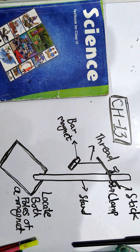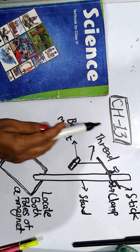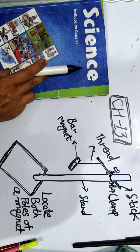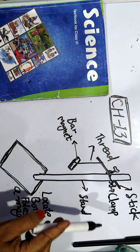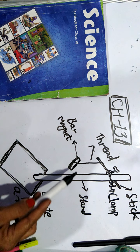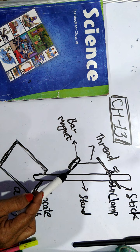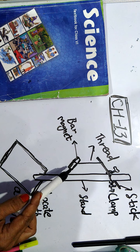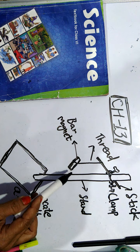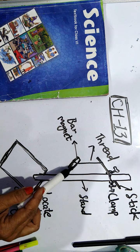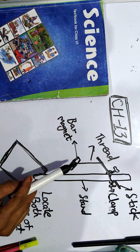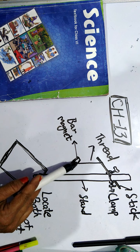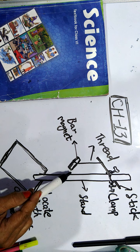A very good morning to all of you students. In this video we are proceeding with chapter 13 of science, that is 'Playing with Magnets'. Today we are going to find both poles of the magnet. As we had learned in the previous video, a magnet has two poles — namely south pole and north pole. So today we will try to find how we can locate both poles of the magnet.